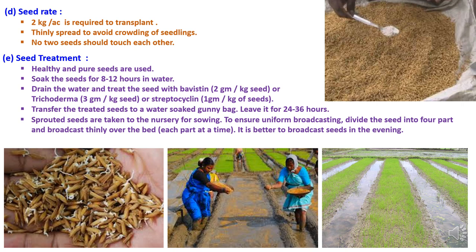The fifth step is seed treatment. Healthy and pure seeds are used to raise nursery seedlings. Soak the seeds for 12 hours in water, then drain and treat with Bavistin at 2 g/kg, or Trichoderma at 3 g/kg seed, or Streptocycline at 1 g/kg of seeds. Transfer the treated seeds to a water-soaked gunny bag and leave for 24 to 36 hours. Sprouted seeds are then taken to the nursery for sowing. To ensure uniform broadcasting, divide the seed into four parts and broadcast thinly over the bed, each part at a time — it is better to broadcast seeds in the evening.